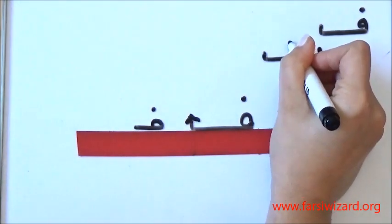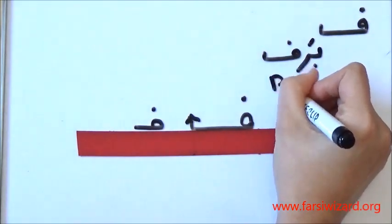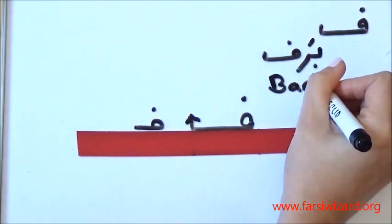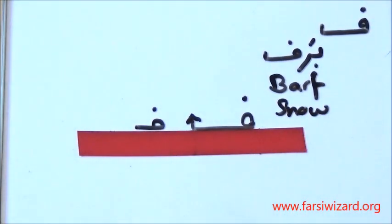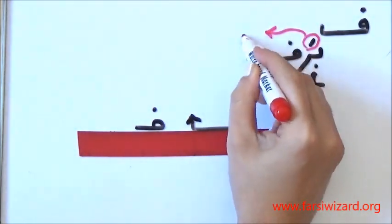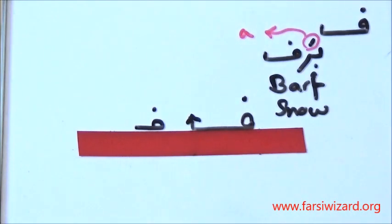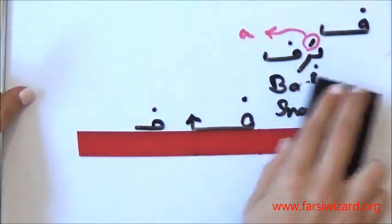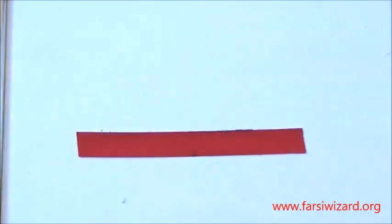One example would be the word BARF. BARF means snow. And if you remember from previous videos, this is A, the short vowel A. BARF. You see the letter Fe at the end here. That's why you're using the complete form.